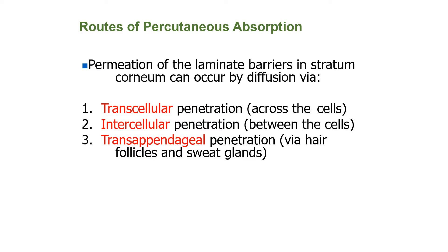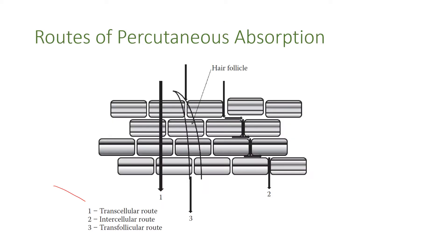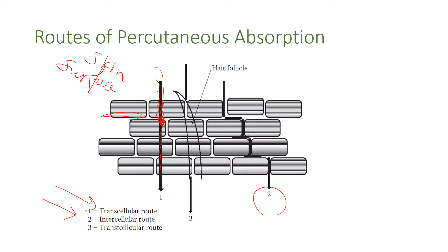Let's talk about how the drug moves through the skin. There are three main mechanisms: transcellular, which means moving across the cell — entering one cell and exiting from the other side; intercellular, meaning moving in between cells; and transappendageal, which is moving via hair follicles and sweat glands. In transcellular transport, the drug enters from the skin surface and exits from the other side of the cell into the next layer, while intercellular transport involves the drug moving between cells until it reaches the blood side.